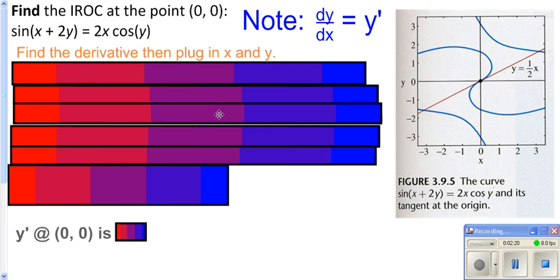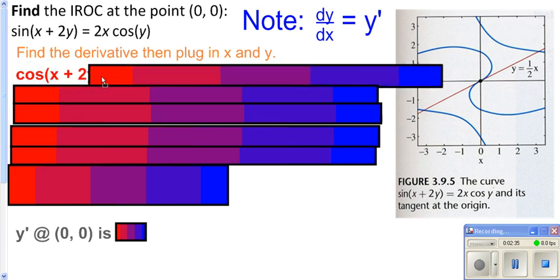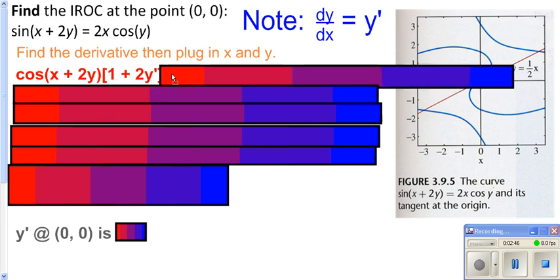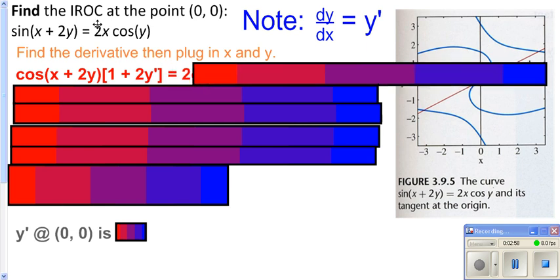Now we need to go ahead and find our instantaneous rate of change at a particular point. Instantaneous rate of change is another name for your derivative. On the left side, we've got to do the derivative of the outside function — derivative of sine is cosine — so you keep the inside the same. Then multiply by the derivative of the inside. The derivative of x is 1, and the derivative of 2y is 2y prime. On the right side, since you have 2x times cosine y, you need to use the product rule.